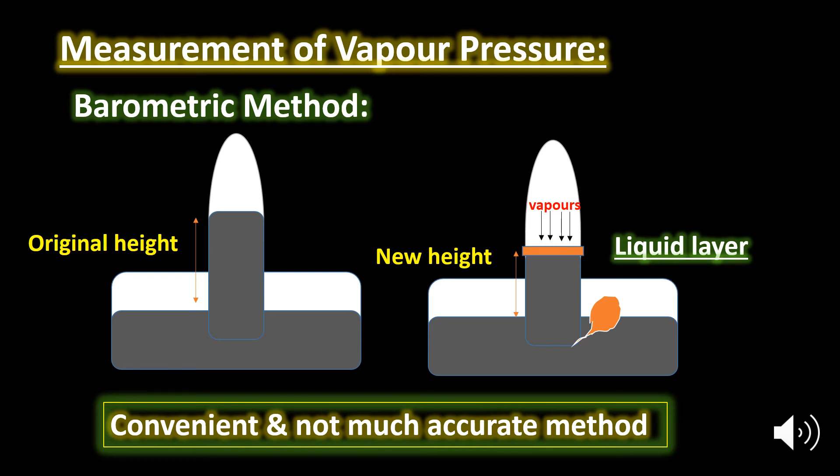The height of the mercury column falls and when it becomes constant, it is noted. The difference in height gives the vapor pressure. Although this method is very convenient, it is not very accurate.